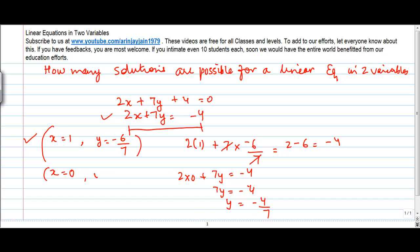So, x is equal to 0 and y is equal to minus 4 by 7. Both these values are satisfying this equation.